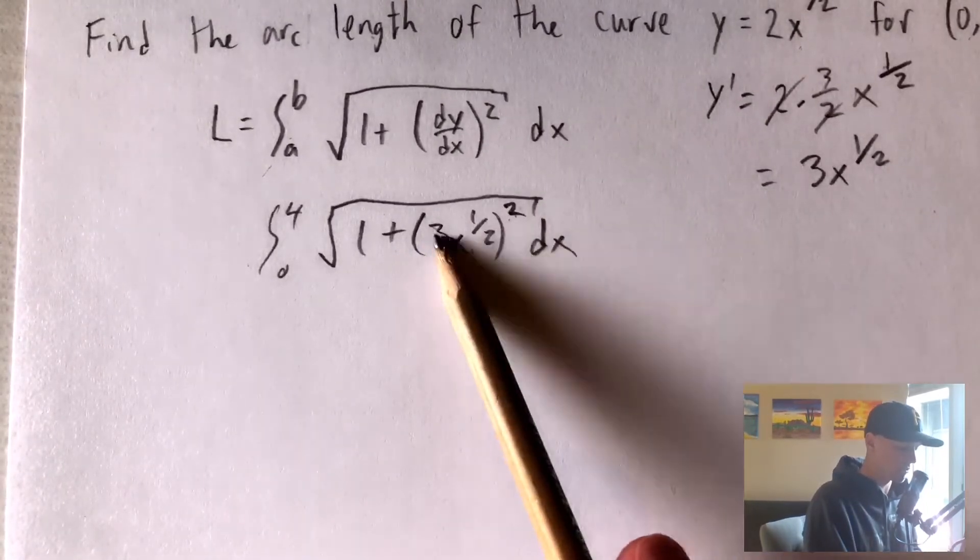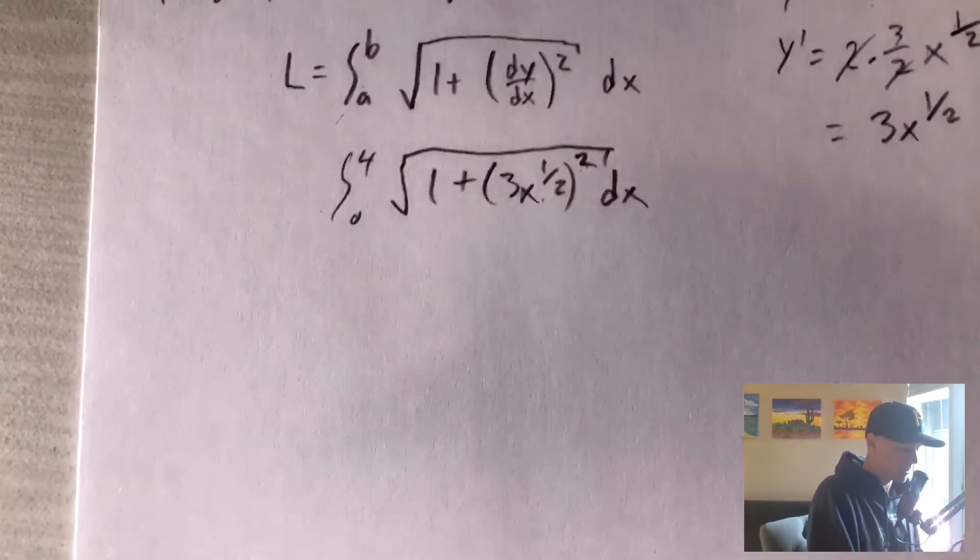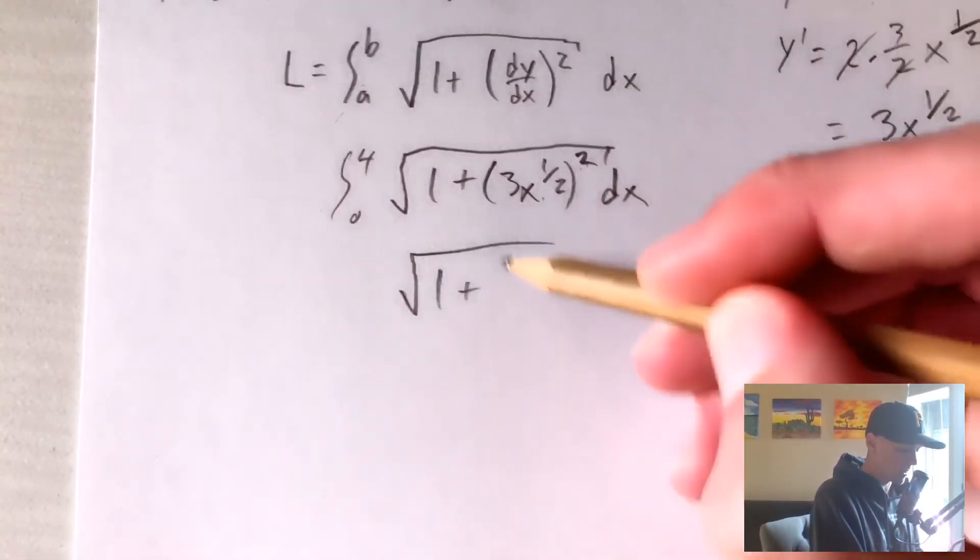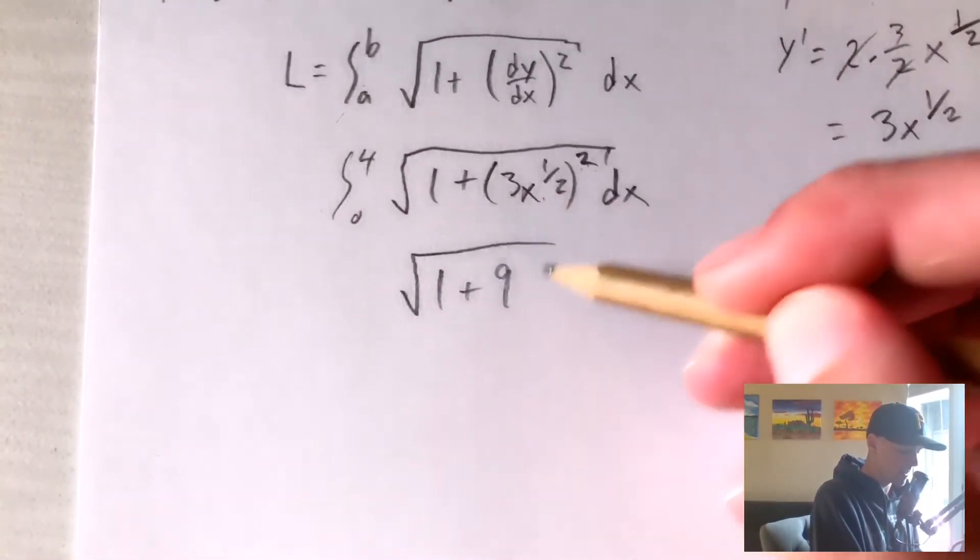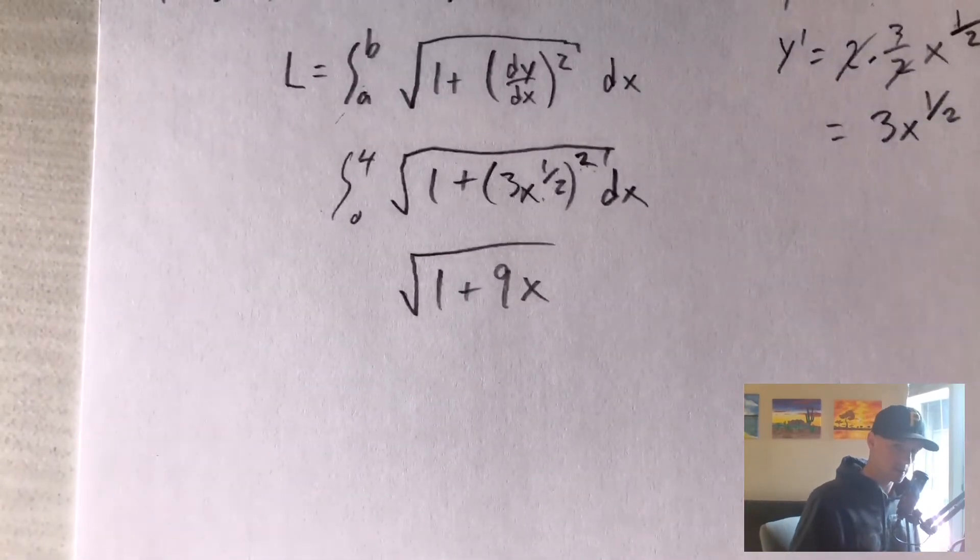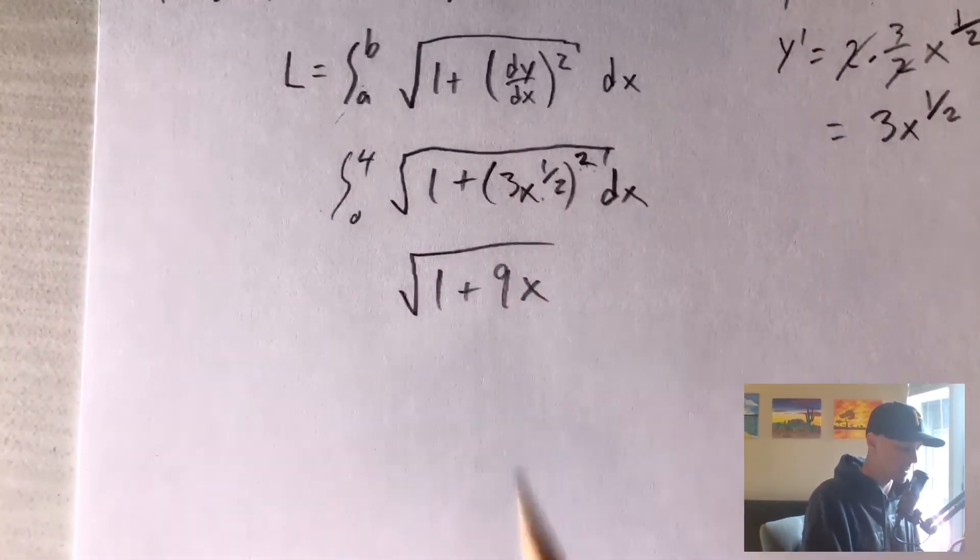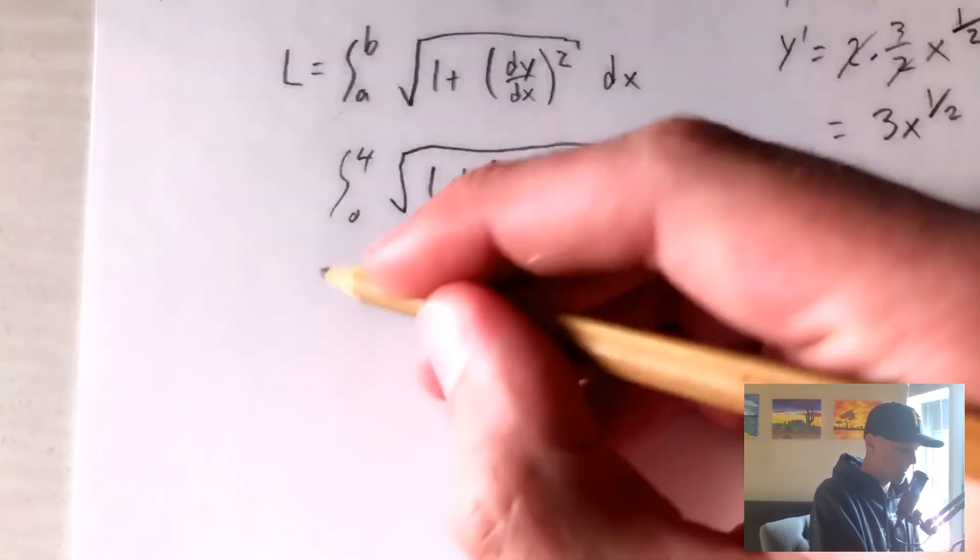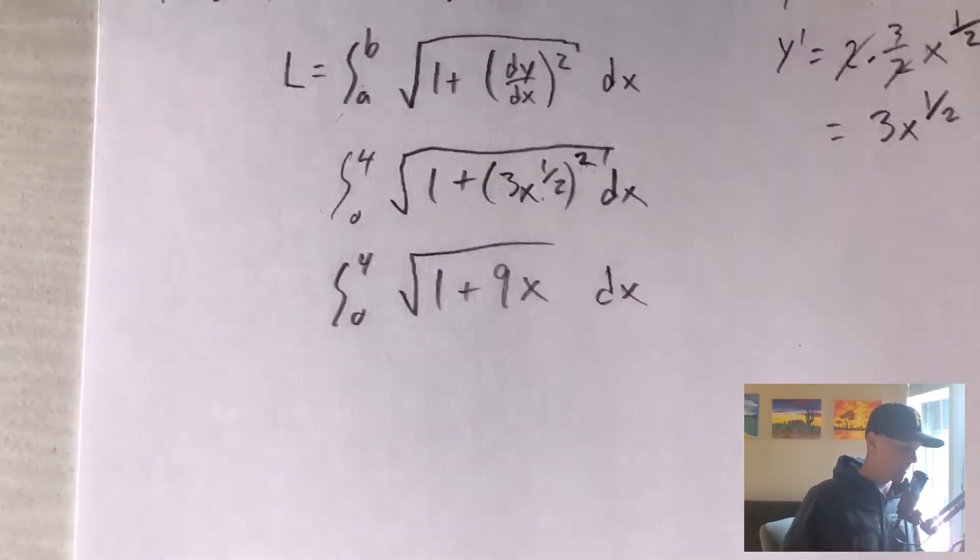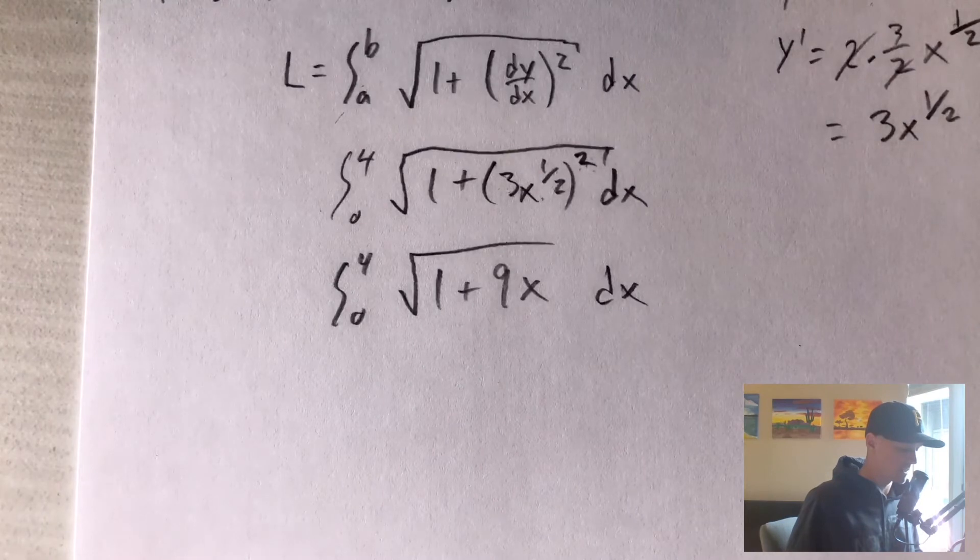Obviously, we have this 3 being squared as well. So we're going to get 1 plus 3 squared is 9, and then the square root of x squared is x. So what's in the square root here is just going to simplify to 1 plus 9x. And then the rest of our stuff is just going to stay the same.